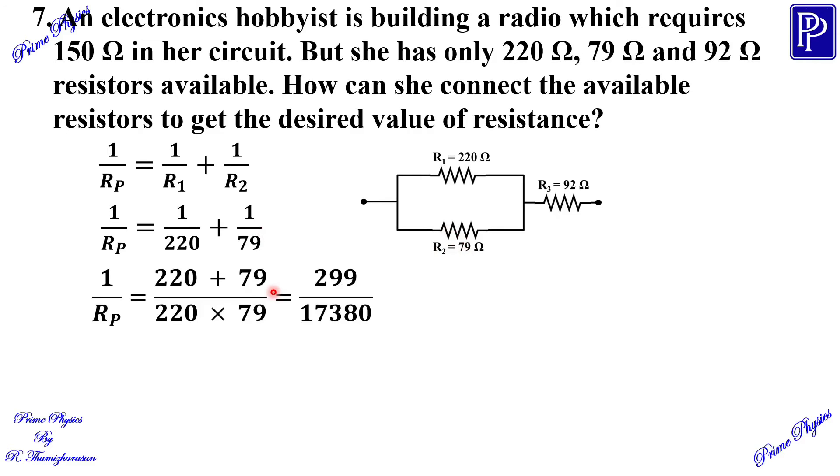Now, taking LCM to simplify: 1/Rp = 299/17380. These two are reciprocal. Now, Rp = 17380/299. If we divide the value, Rp = 58 ohm.